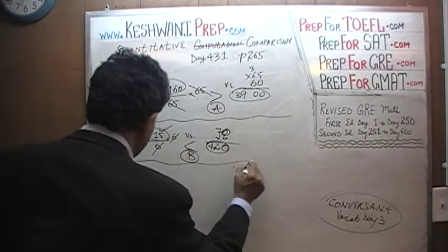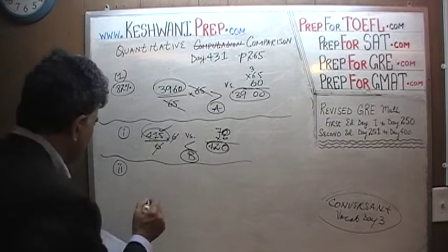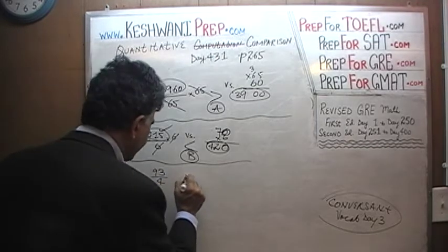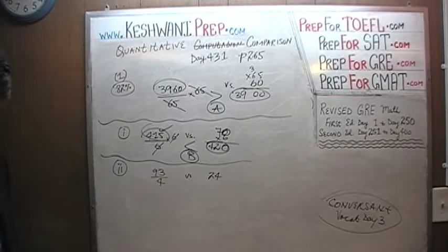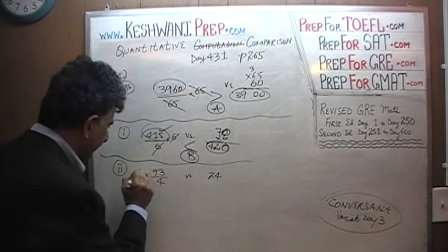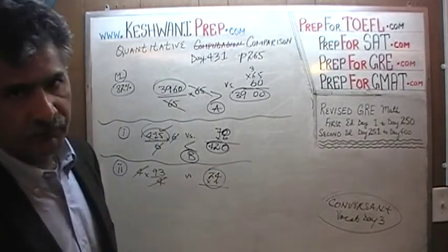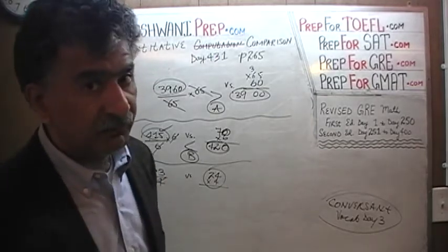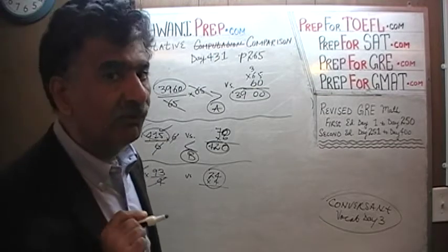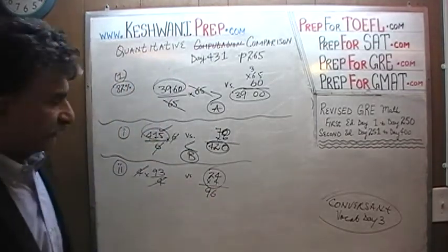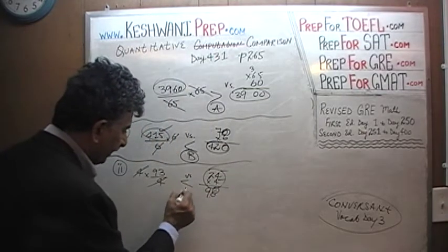Let's do one more. Bonus question number 2: 93 divided by 4 versus 24. Multiply both columns by 4 — the 4 drops out. Now, how much is 24 times 4? I know 25 times 4 is 100. If 25 times 4 is 100, then 24 times 4 has to be 4 less than 100 — it has to be 96. So we have 96 versus 93. 96 is bigger. The answer is B.